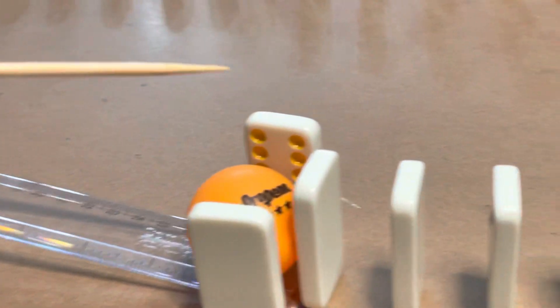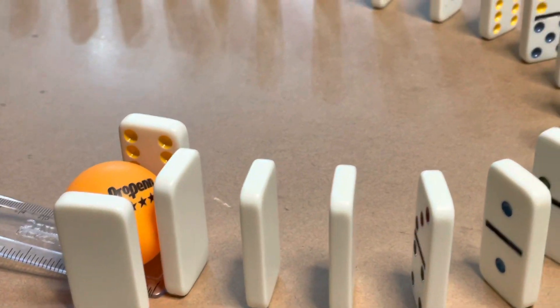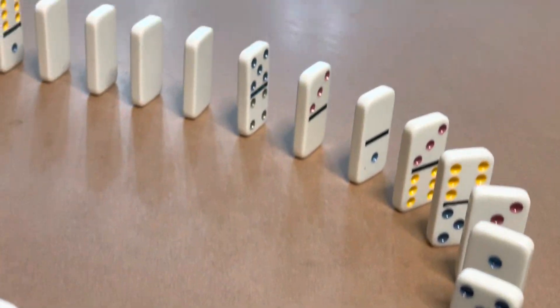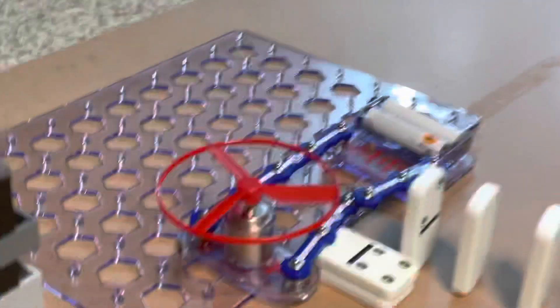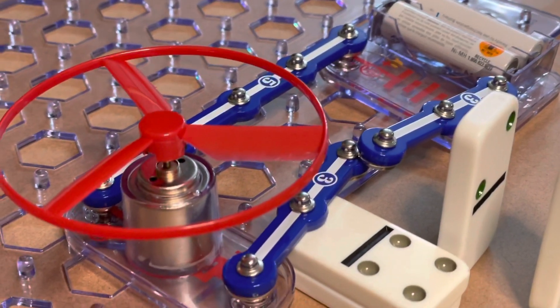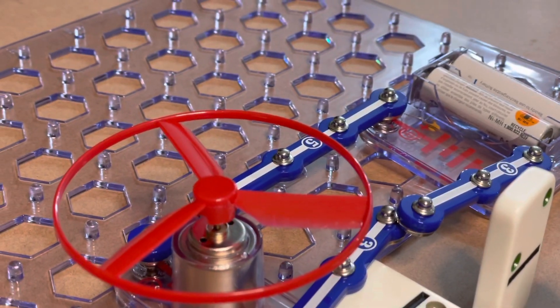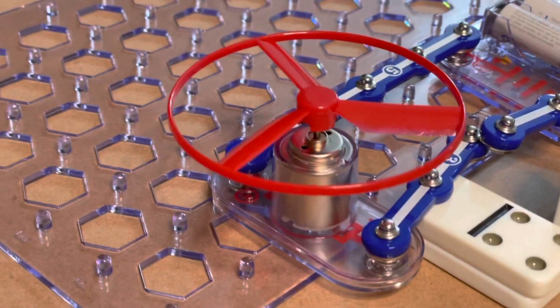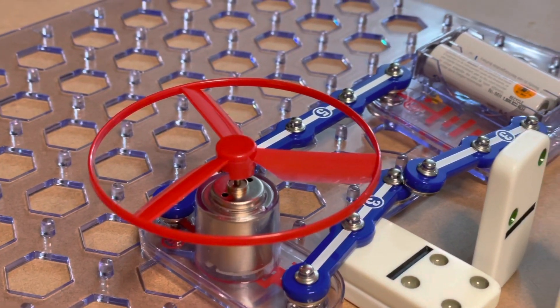And my dominoes when standing up also have potential energy and when they slant they actually transfer to kinetic energy and they start to knock each other over. And when they knock each other over, when my circuit closes, my battery has chemical energy that is transferring to electrical energy which then creates mechanical energy because my fan starts to spin.